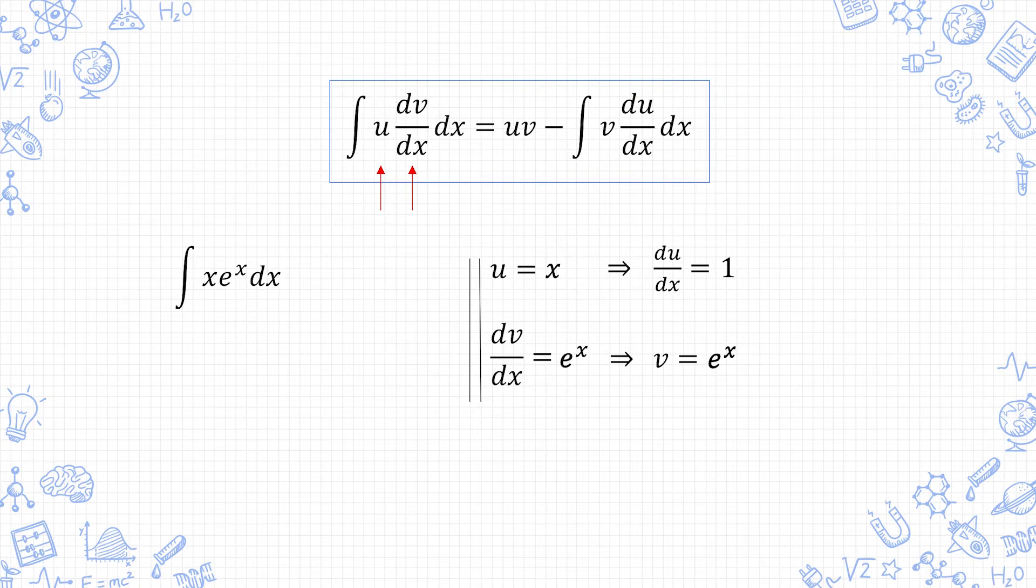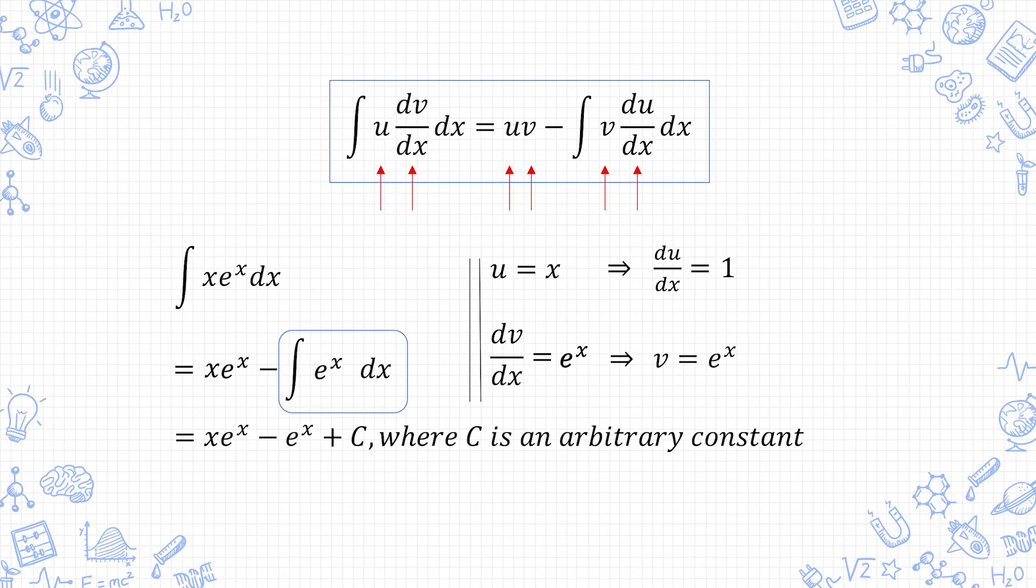But I don't advocate for that because you might lose method marks or make careless mistakes. Back to the question, we have uv minus integral of v du/dx, which is 1 so I won't write it in. And you can then integrate this directly to produce the final answer in the next line. For questions where you still can't integrate this directly, just apply integration by parts again and again until you can.